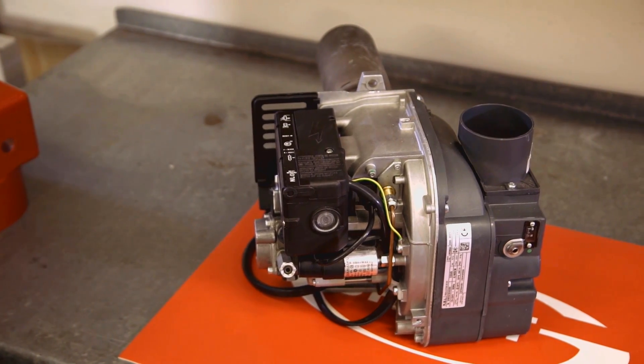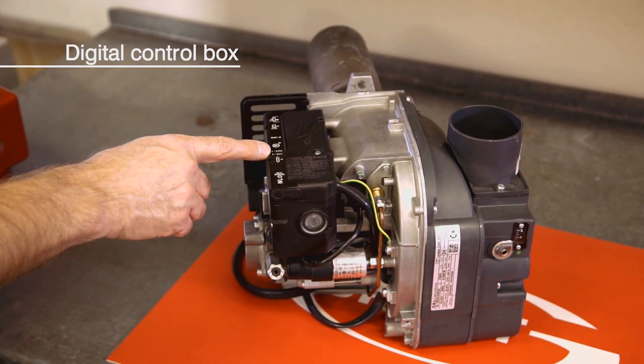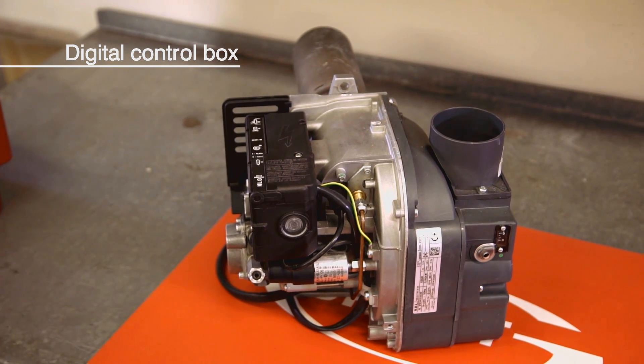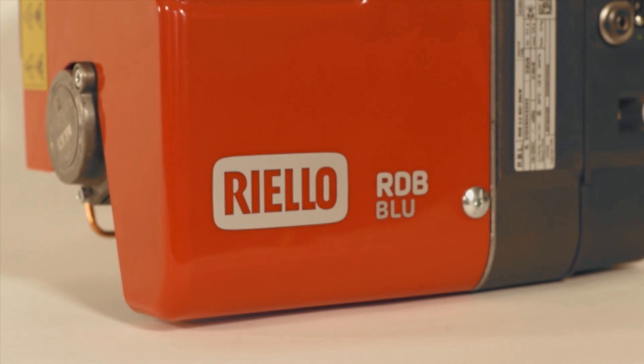This UV cell requires a digital control box instead of the 535SE analog box more commonly found on RDB burners.